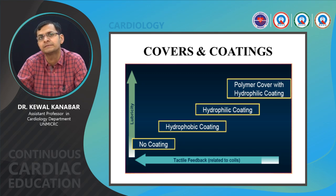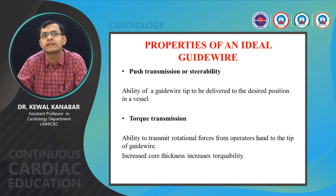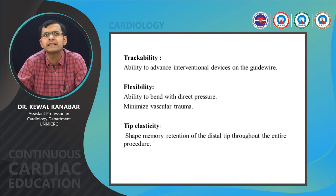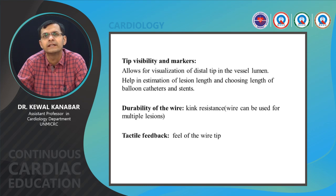The ideal guide wire should have good push transmission — whatever you push should be transmitted to the distal tip. It should have good torque transmission, ideally one-to-one torque transmission, which is probably best with the Sion wire. Trackability is the ability to deliver interventional devices. It should be flexible, its tip should be elastic with memory retention during the entire procedure, the tip should be visible based on the radiopaque portion, and it should be kink-resistant and provide good tactile feedback.